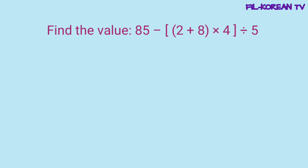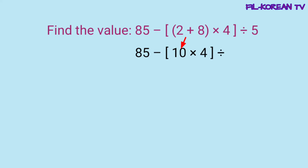Ngayon naman, i-solve natin yung problem na ito. Dito merong dalawang grouping symbols na ginamit — merong parenthesis at bracket. Dito sa groupings, uunahin natin yung pag-solve sa nasa loob ng parenthesis: 2 plus 8 equals 10. Sunod, eto na yung nasa loob ng bracket — yung 10 times 4: 10 times 4 equals 40.